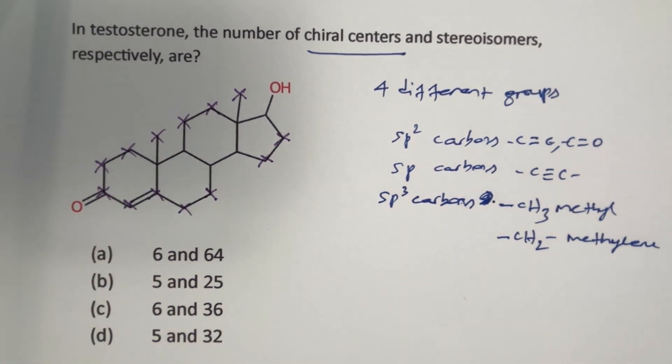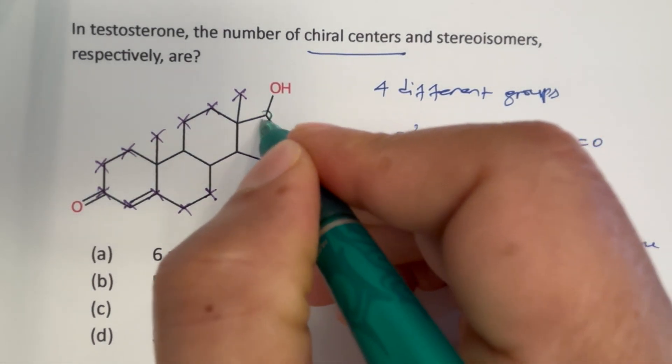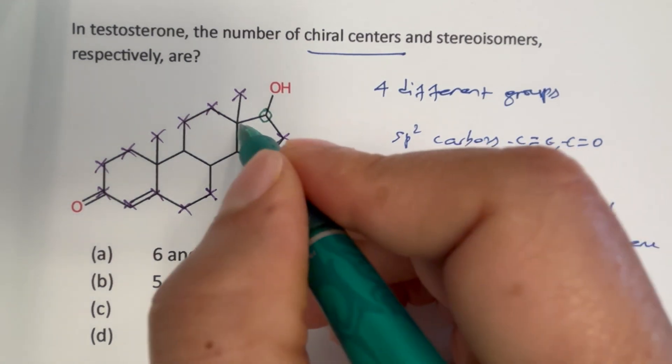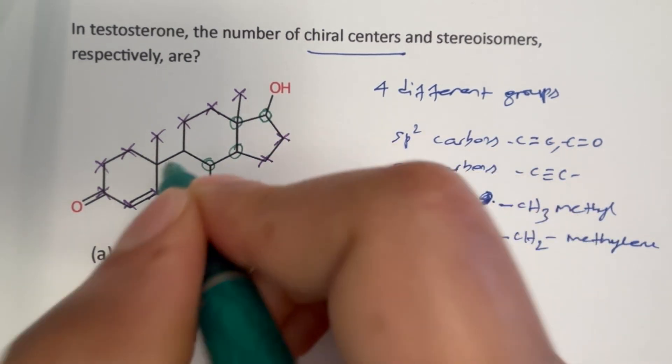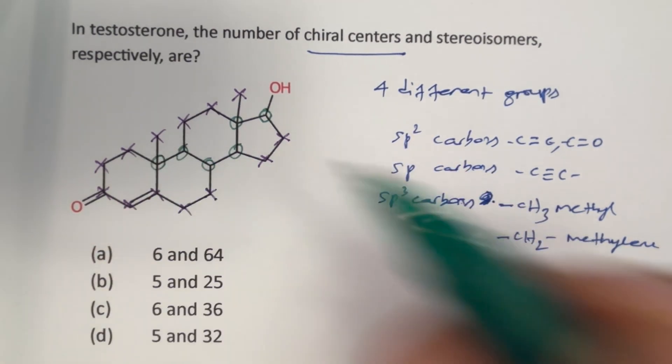So now count how many carbon atoms are remaining. Those could be chiral: 1, 2, 3, 4, 5, 6.